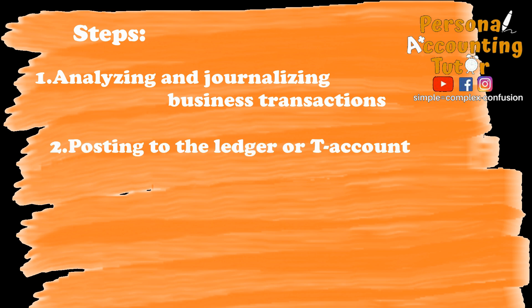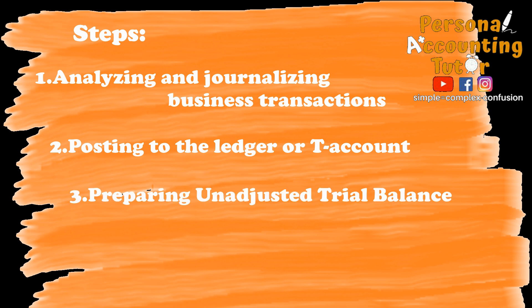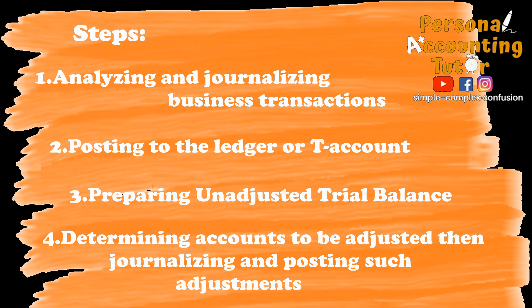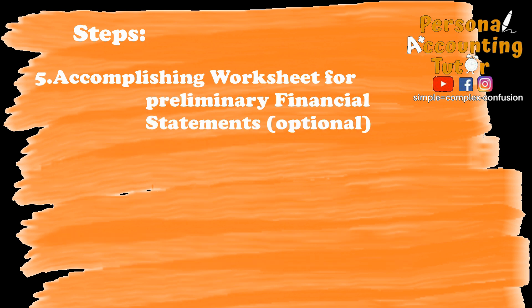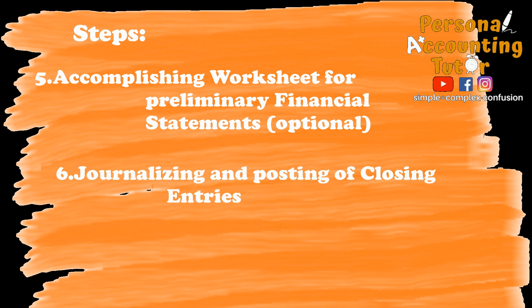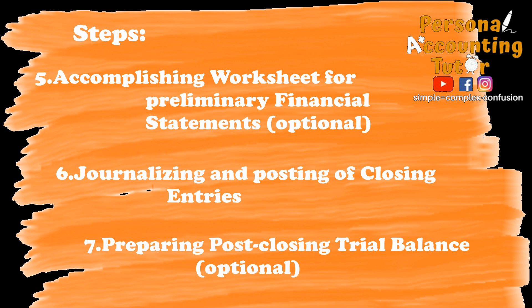The second is posting to the ledger or T-account. Third, preparing an adjusted trial balance. Fourth, determining accounts to be adjusted and journalizing and posting such adjustments. Fifth, accomplishing a worksheet for preliminary financial statements, which is an optional step. Sixth, journalizing and posting of closing entries. Seven, preparing post-closing trial balance, also an optional step.